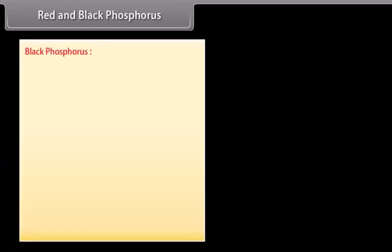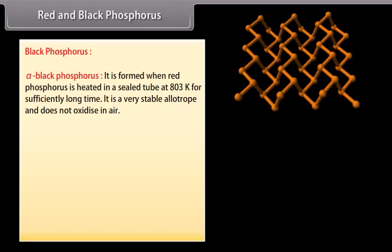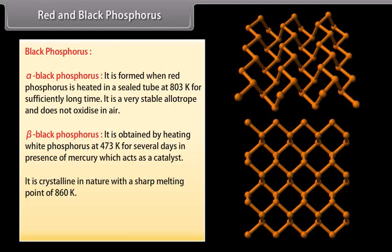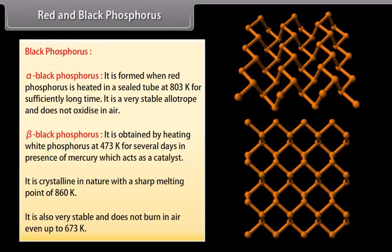Black phosphorus has two forms. Alpha black phosphorus is formed when red phosphorus is heated in a sealed tube at 803 K for a sufficiently long time; it is a very stable allotrope and does not oxidise in air. Beta black phosphorus is obtained by heating white phosphorus at 473 K for several days in the presence of mercury as a catalyst; it is crystalline with a sharp melting point of 860 K and does not burn in air even up to 673 K.